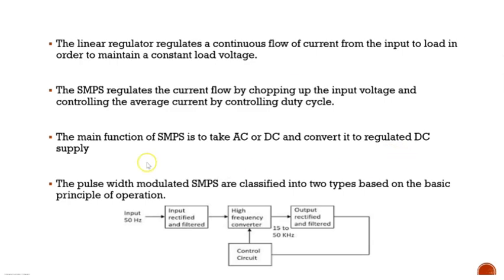SMPS will take either AC or DC and convert it to a regulated DC supply. In the basic block diagram of SMPS, the input is a 50 Hz AC supply, which is converted to DC, then given to a high frequency converter. There is a control unit — a pulse width modulator — and the output is rectified, filtered, and we get a regulated DC output.